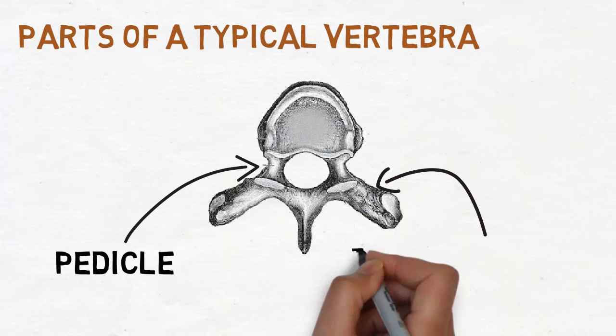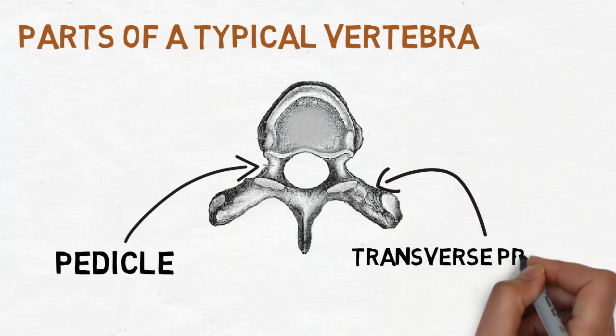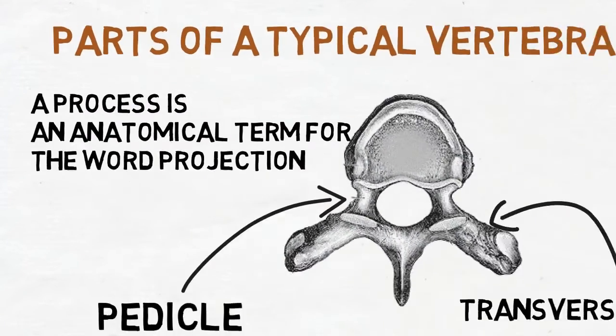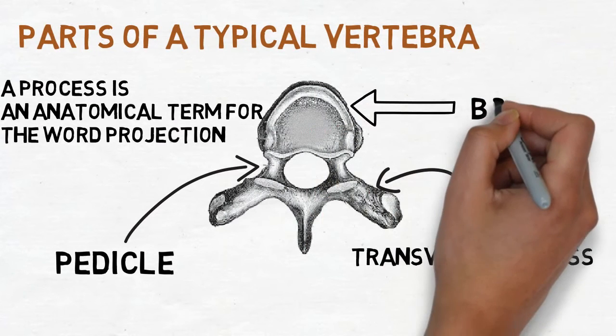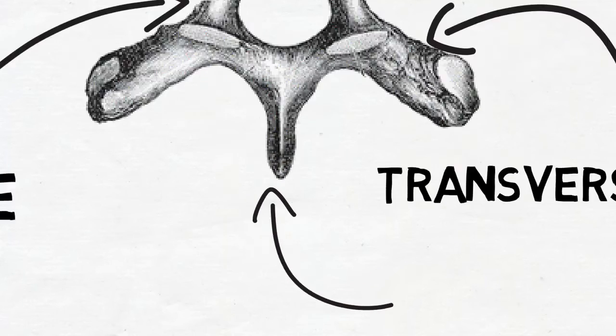This is a process of a vertebra called the transverse process. So let's understand what a process means. A process is an anatomical term for the word projection. This is the body of the vertebra which lies anteriorly and this pointed thing which you can see is the spinous process which passes backwards.